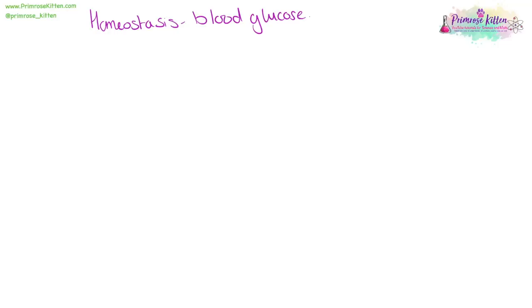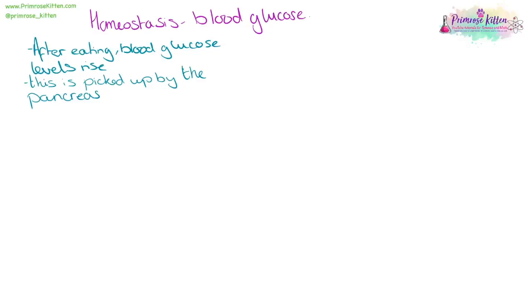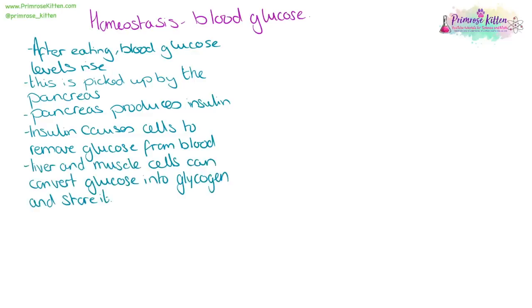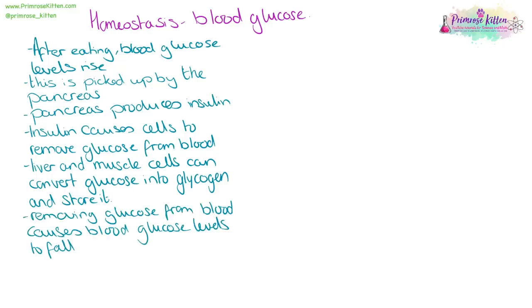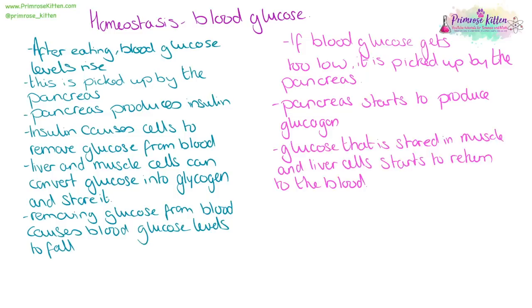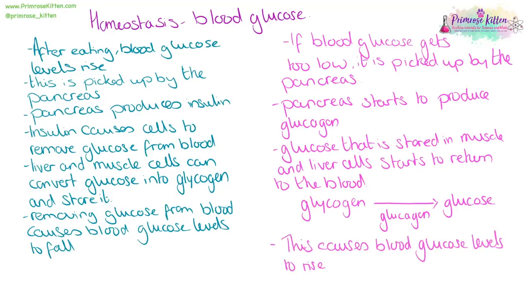Control of blood glucose is complicated. After a meal, blood glucose levels start to rise — this is picked up by the pancreas, which produces insulin that is sent into the blood. Insulin causes body cells to remove glucose from the blood. Liver and muscle cells convert glucose into glycogen and store it, causing blood glucose levels to fall. If blood glucose levels get too low, the pancreas produces glucagon. The glucose stored in muscle and liver cells returns to the blood. The stored form of glucose is glycogen; glucagon converts glycogen back into glucose, causing blood glucose levels to rise again.